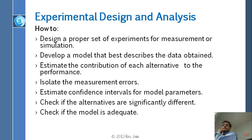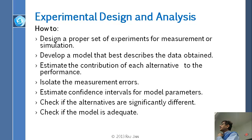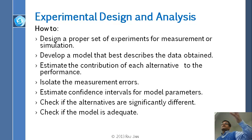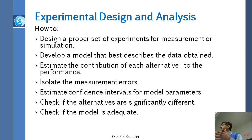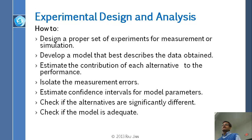A student asks: alternatives between what? Basically here, alternative means that one of the variables has five values — five types of CPUs — those are the five alternatives. So basically, check if different values of the factor result in different performance.